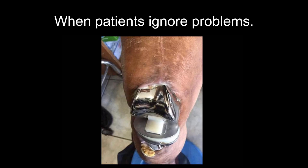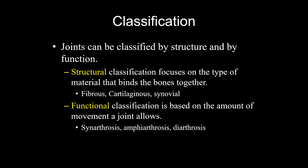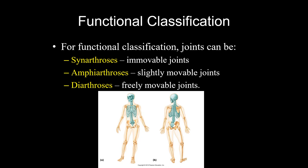The next thing the book does is classify joints, and there are two ways to do that. You can classify joints based on what they're made of — that's structural classification — and your three options are fibrous joints, cartilaginous joints, or synovial joints. Or you can classify joints based on how much movement is allowed. That's functional classification, and your options are synarthrosis (no movement), amphiarthrosis (a little movement), and diarthrosis (freely moving).